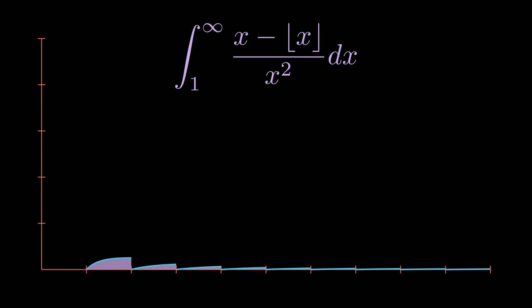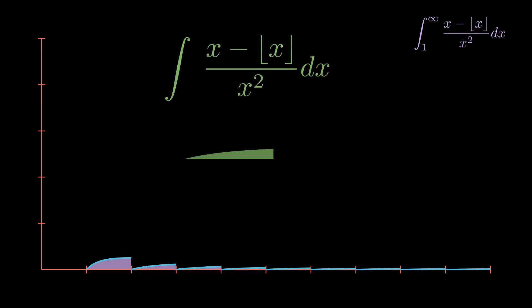Let's find a general formula for the area of any single one of these slices, and then use that to find the total area. The nth area will need to be evaluated as an integral. It follows the curve of x minus floor x over x squared. The area goes from x equals n to x equals n plus 1, meaning those will be the bounds of this integral. Between n and n plus 1, floor of x is equal to n. Therefore, this area is defined by the integral from n to n plus 1 of x minus n over x squared.